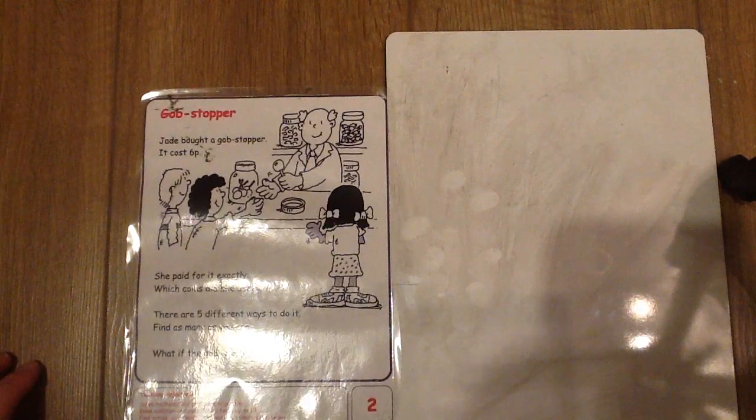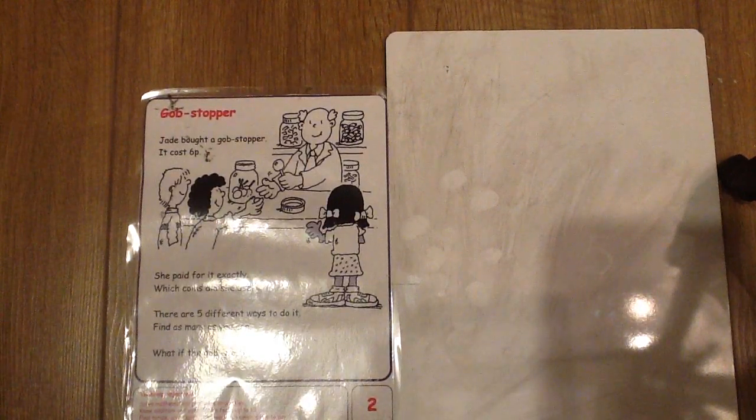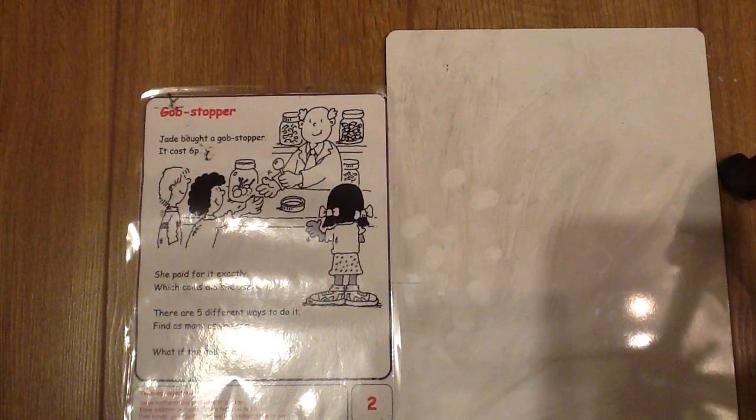As an extension, what if the Gobstopper costs 7p? How many different ways can you find?